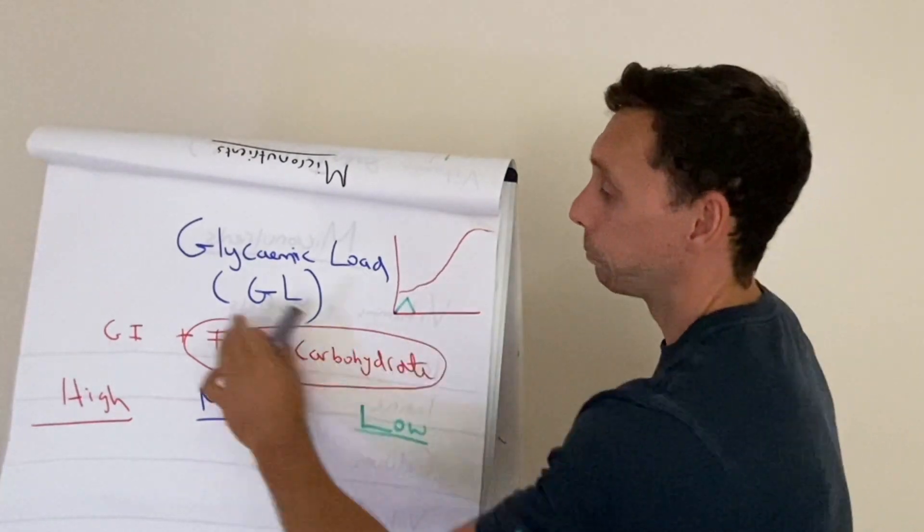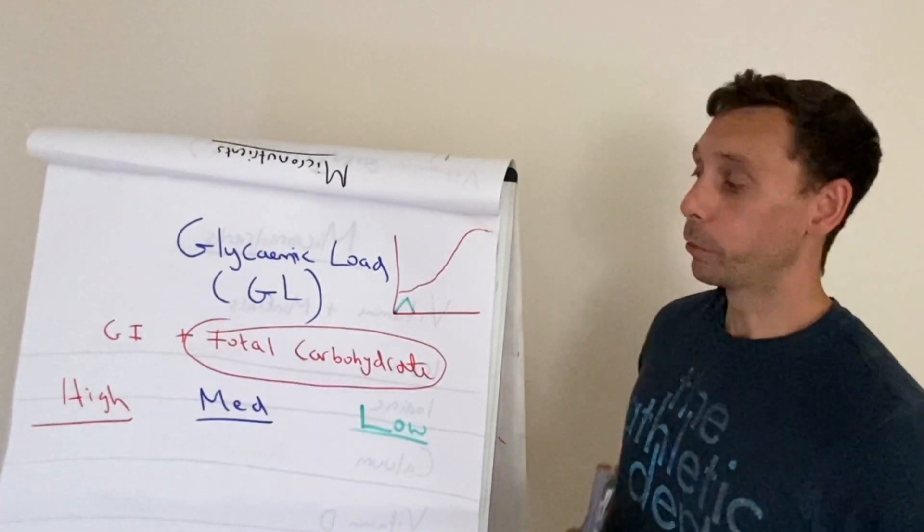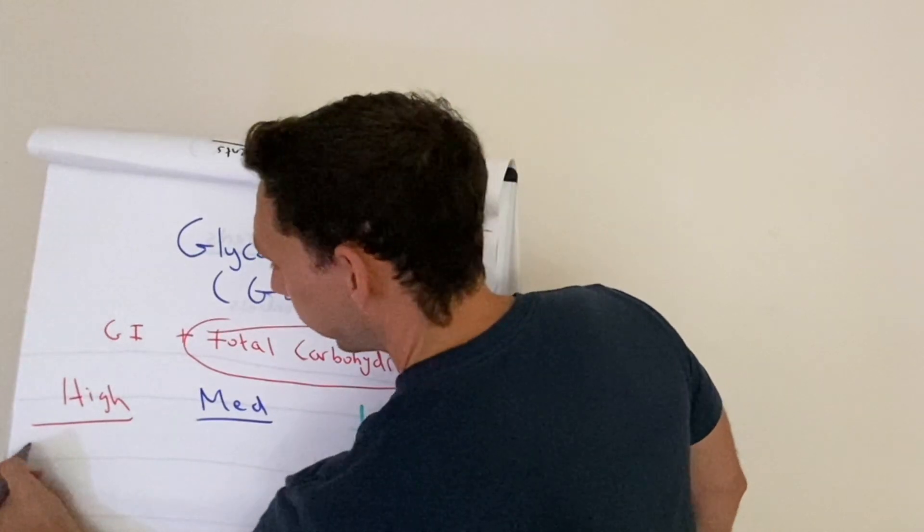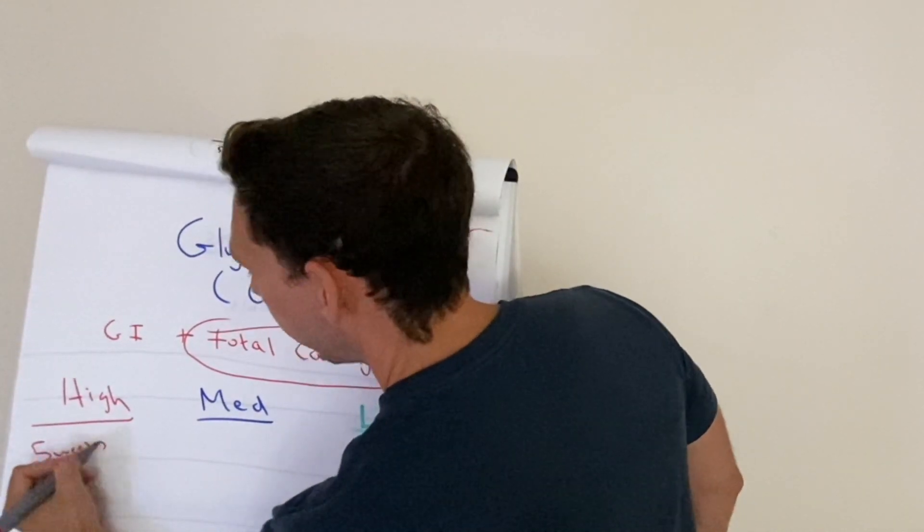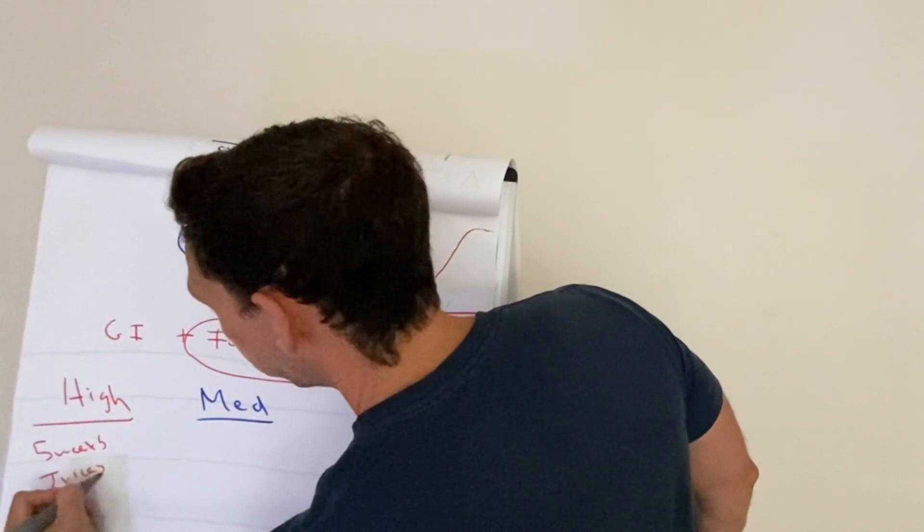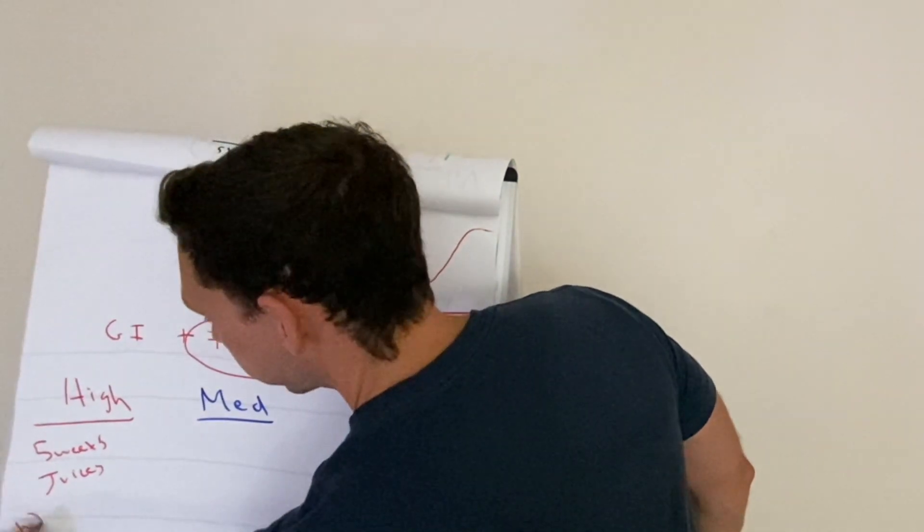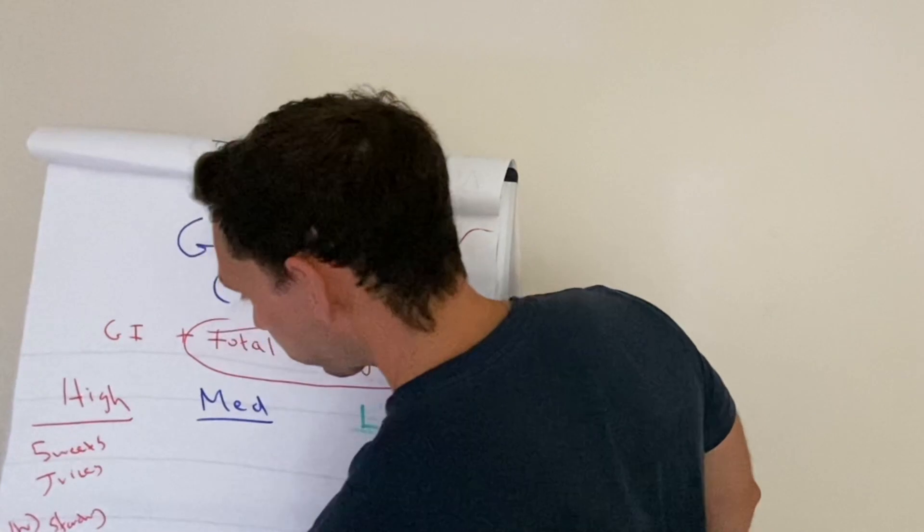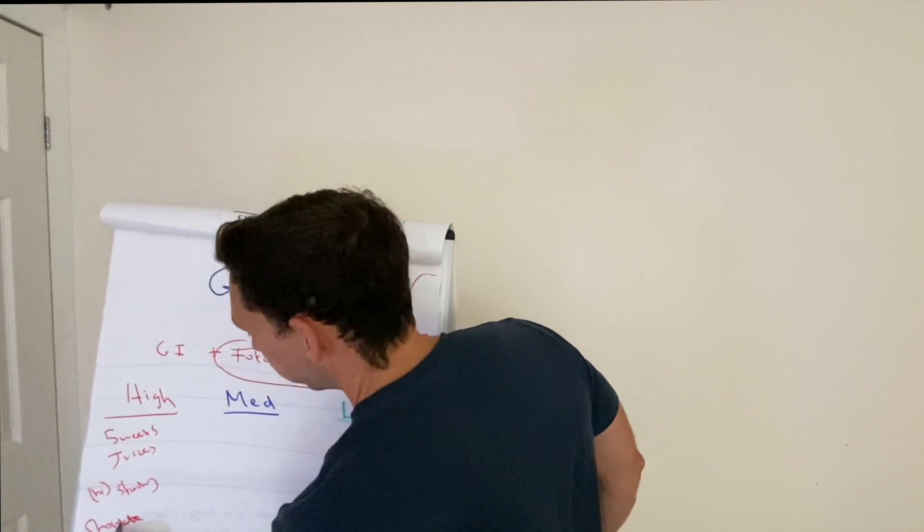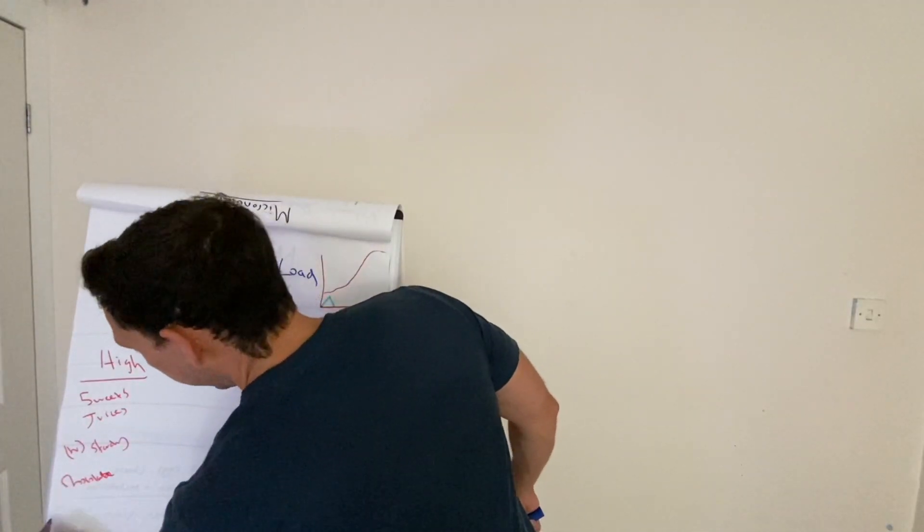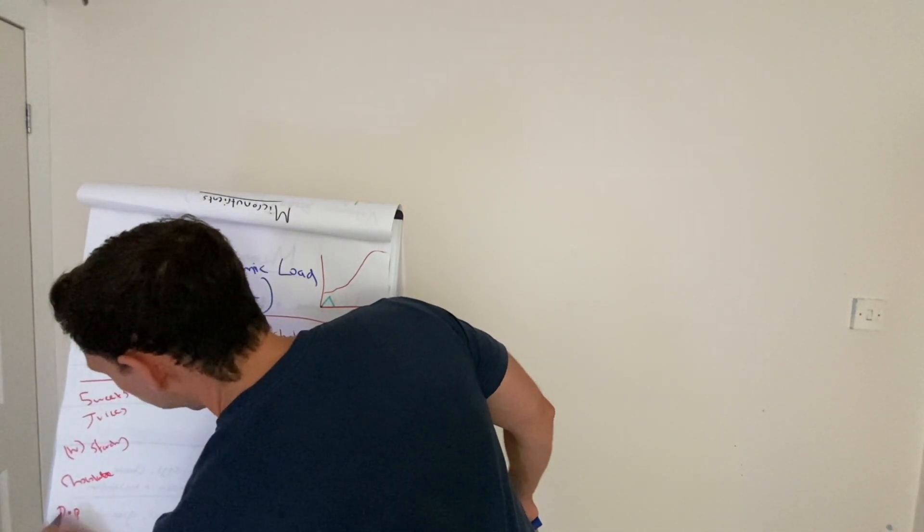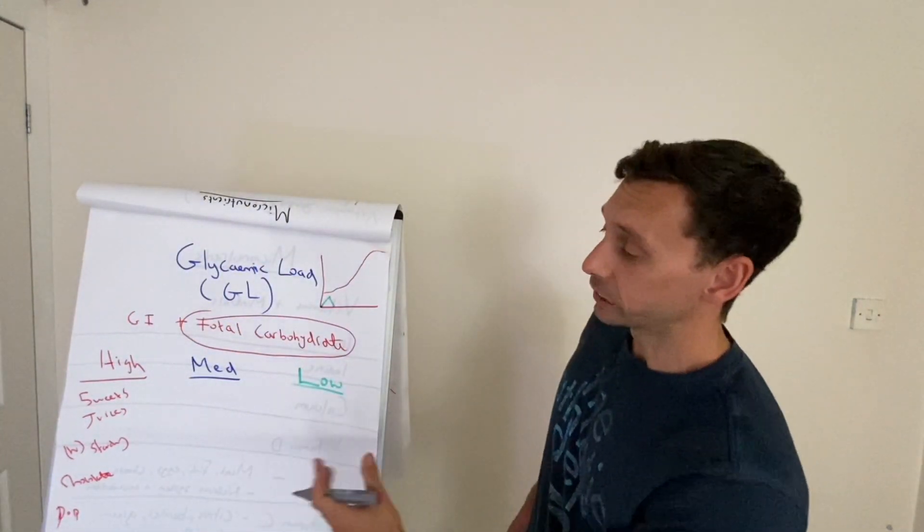So when we start to factor in both of these measurements, the food groups that would be considered high, medium, and low are much more like we'd expect. The high group tends to be anything like sweets or any sort of those candy kind of foods, juices—so pretty similar to the GI—any of those white starchy foods as we mentioned before. But now we start to get things like chocolate in here, which was considered lower GI in the other measure, anything that might be any pop drinks as well, any of those kind of foods that we'd probably anticipate to be not good for us fall into these categories.